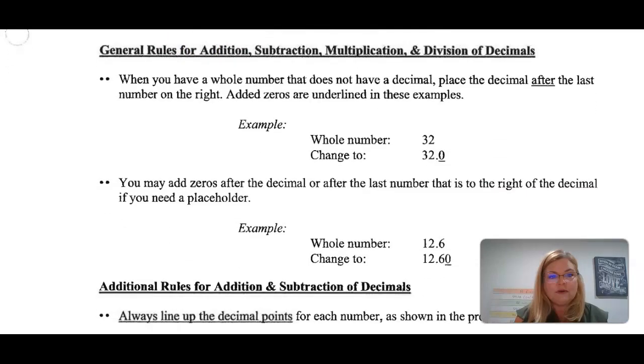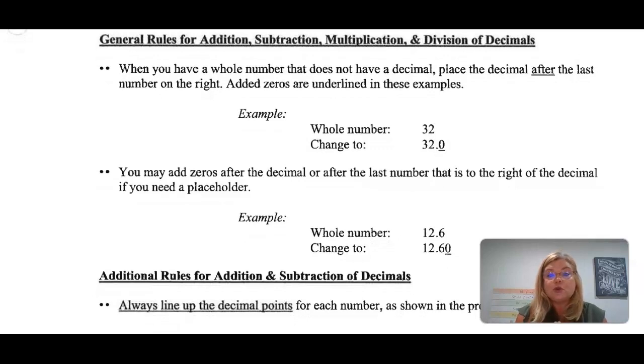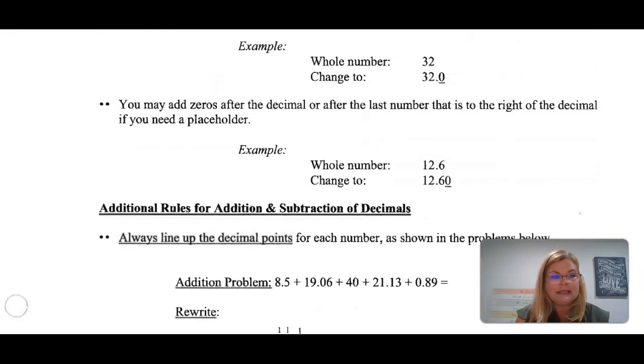It gives you an example here. The whole number is 32. If we're going to convert that and we're using decimals to add, subtract, multiply, or divide, we need to know where that decimal is. In this example, you can see that becomes 32.0 or 32.0 to hold that place there.